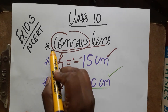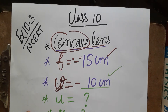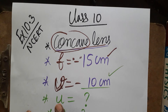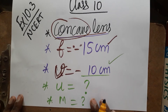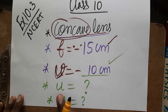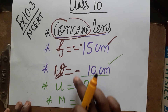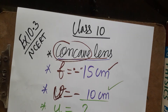The question gives us a concave lens where the focal length is 15 cm and the image distance is 10 cm. They ask us to find the object distance and the magnification. The negative signs are not given in the question — I have taken them as negative, and I will explain why.